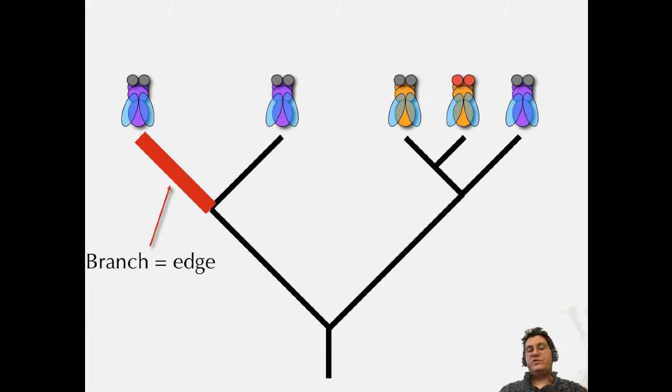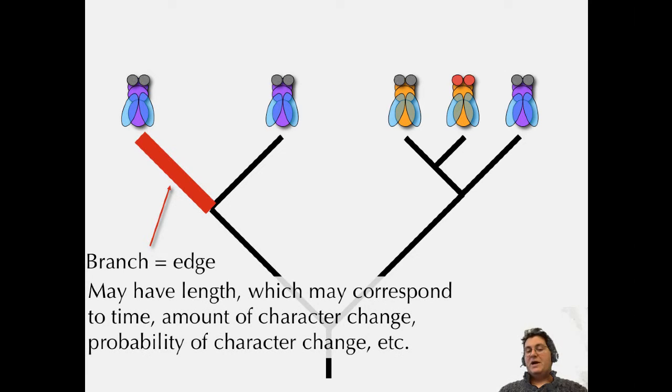A branch on the tree is also known as an edge. It might have length, and that could correspond to time, amount of character change, or probability of character change. Just looking at a tree, can you tell what that is? No. Sometimes it has a branch length that doesn't mean anything other than what looks good to draw. You have to often read the paper to figure out what the branch lengths mean.